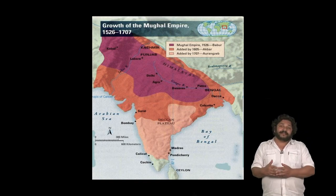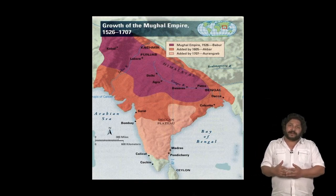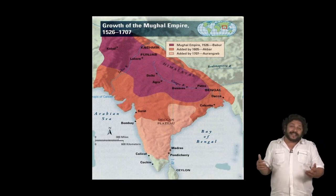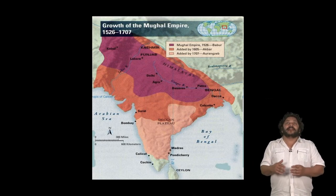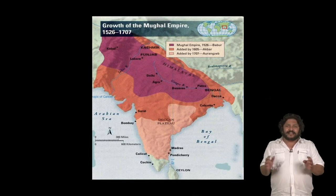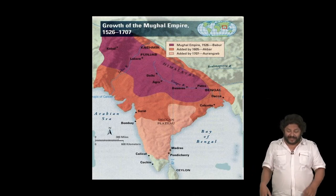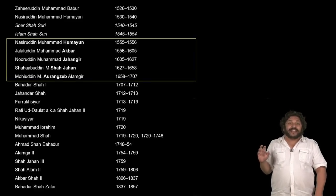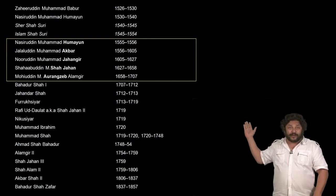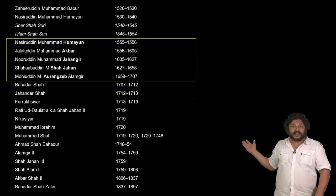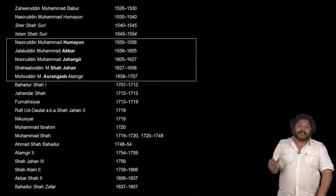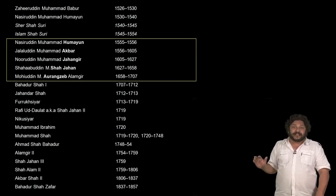After the death of Aurangzeb in 1707, the Mughal Empire starts fragmenting, and by the end of the Mughal era in 1858, when the last Mughal emperor Bahadur Shah Zafar is sent off to Burma, there is very little expansion — in fact, a contraction of the kingdom. Therefore, the five great Mughal emperors are Humayun, Akbar, Jahangir, Shah Jahan, and Aurangzeb, and it is in their reigns that we find most Mughal construction.